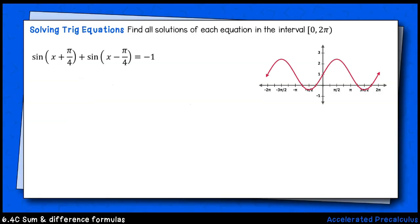In this first example, we are solving an equation consisting of sine of a sum of two angles added to sine of a difference of two angles. The left-hand expression is equal to negative one.